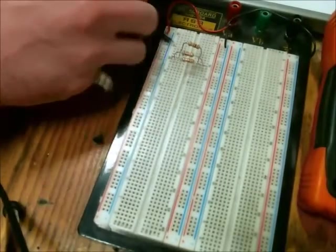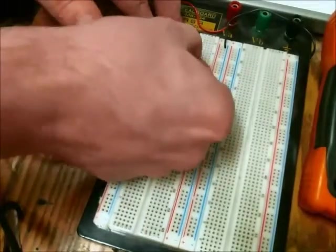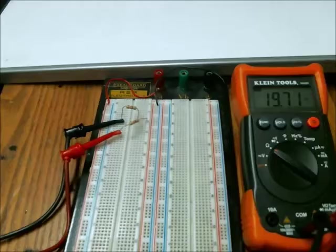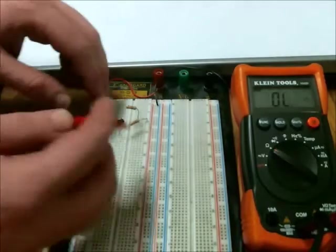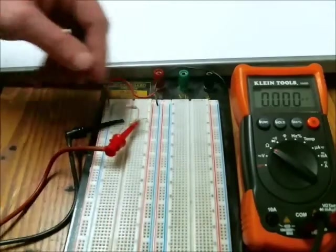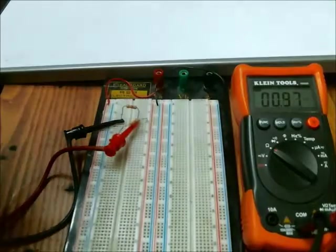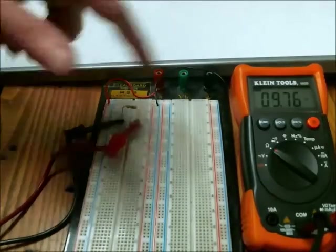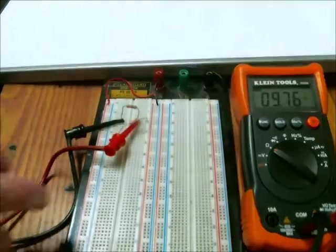And if we look at those values in series, if we look at just the one resistor, it should come out being pretty close to 10 kilo ohms of resistance. So we're at 9.76 kilo ohms of resistance.